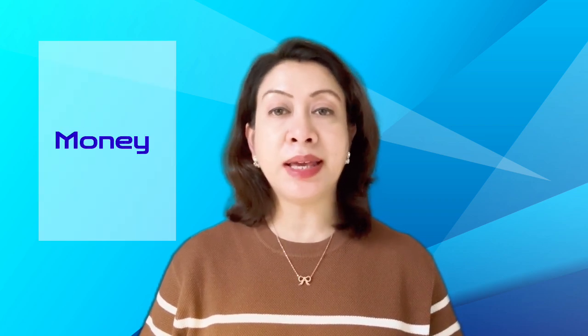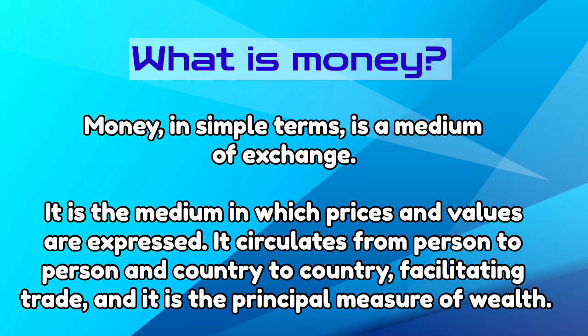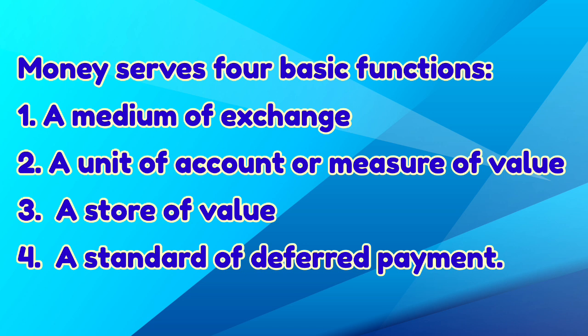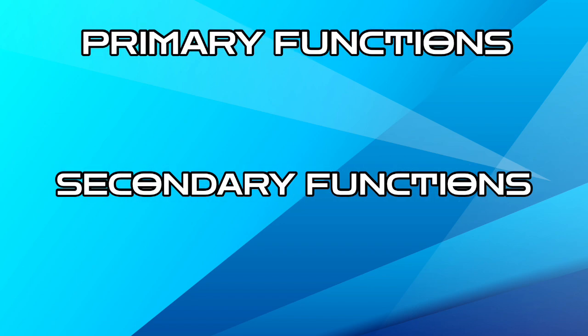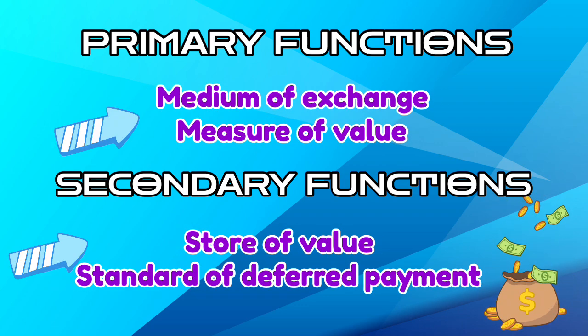We have listed down important functions of money, which can be summarized as follows: money is a matter of functions for — a measure, a unit, a standard, a store. We will recap the meaning and functions of money. Money in simple terms is a medium of exchange. It is the medium in which prices and values are expressed. It circulates from person to person and country to country. Money serves four basic functions: a medium of exchange, a unit of account or measure of value, a store of value, and a standard of deferred payment. Functions of money can be divided into primary functions and secondary functions. Two primary functions of money are: money is used as a medium of exchange, and it is a measure of value. Money performs two secondary functions: it is a standard of deferred payment and a store of value.